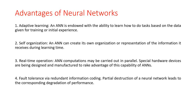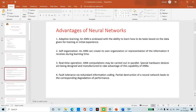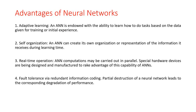An Artificial Neural Network is endowed with the ability to learn how to do tasks based on the data given for training or initial experiment. Second is Self-Organization — an ANN can create its own organization or representation of the information it receives during learning. Third is Real-time Operation — ANN computations may be carried out in parallel, and special hardware devices are being designed to take advantage of this capability. Last is Fault Tolerance via Redundant Information Coding — partial destruction of a Neural Network leads to a corresponding degradation of performance; however, some network capabilities may be retained even after major network damage.